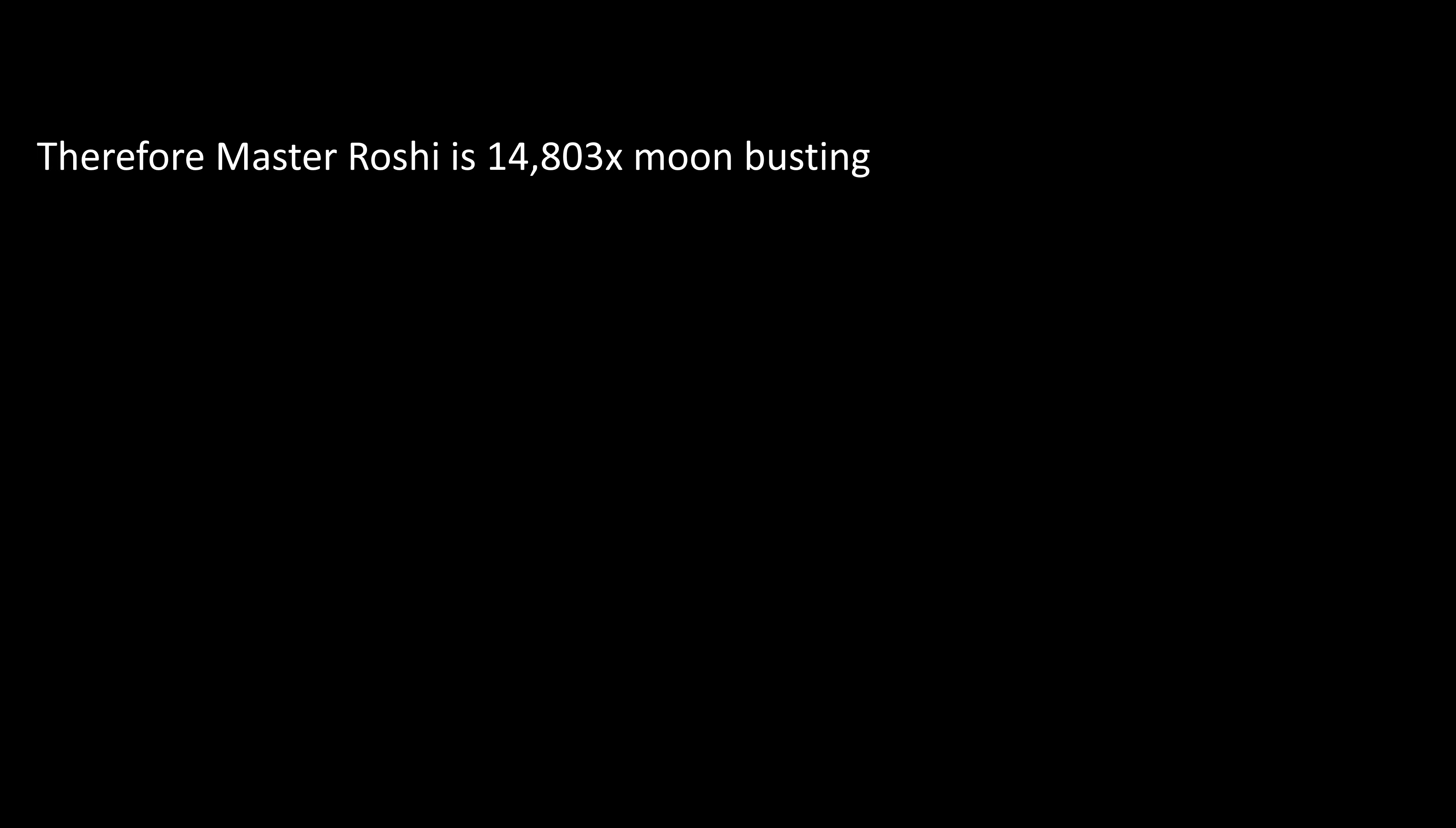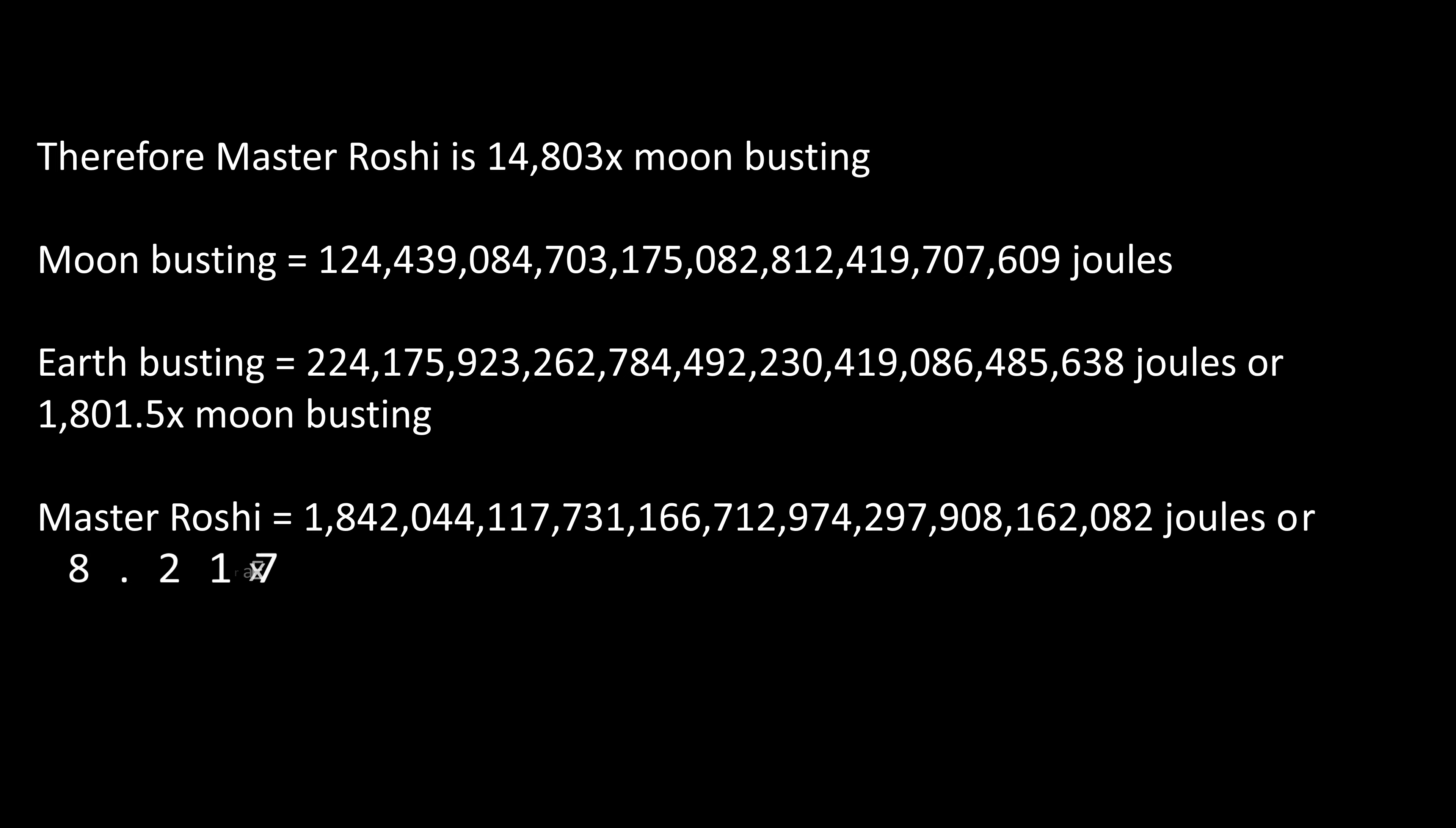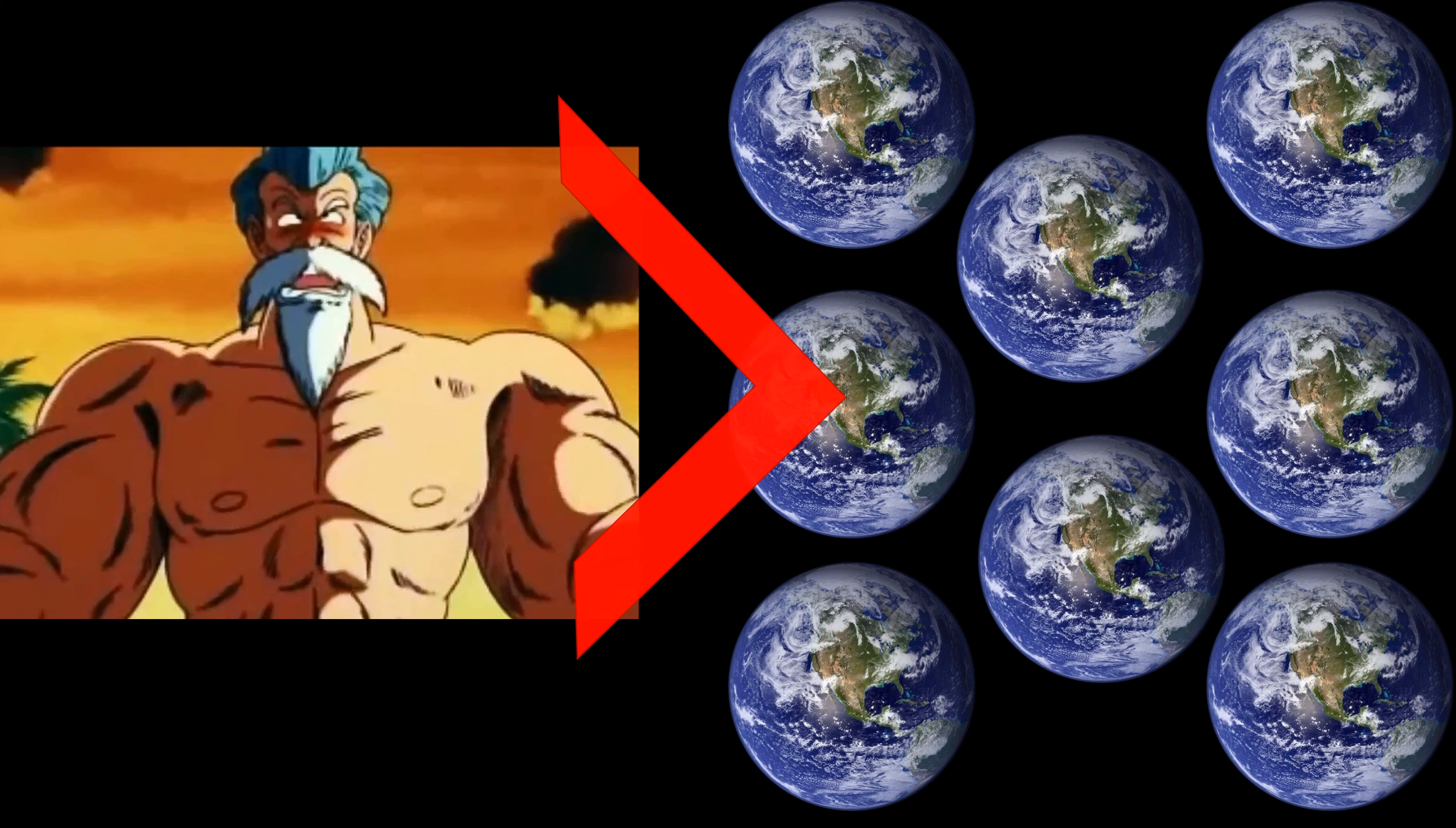Now, let's make this comparison clear. This is the energy of moon busting we previously calculated, but in its full form. If we compare that to that of busting planet Earth, we say that planet Earth is the equivalent of busting 1,800 moons. Master Roshi is even more powerful, being able to bust 8.217 Earths. Yeah, that's right. This Roshi right here is over 8 times more powerful than the energy needed to destroy planet Earth.